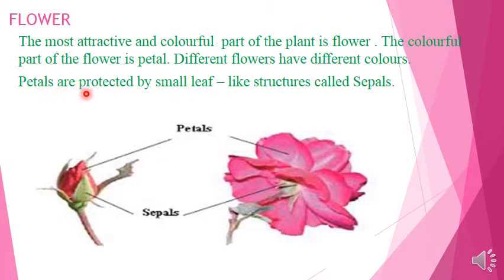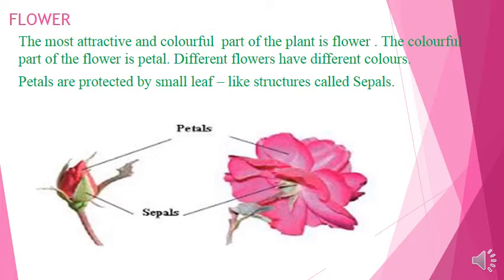Petals are protected by small leaf-like structures called sepals. You can see here the sepals — they protect the bud. Sepals protect the bud, and the colorful part of the flower is called petals. Petals are the most attractive part of the plant. These are the external structures of the flower.